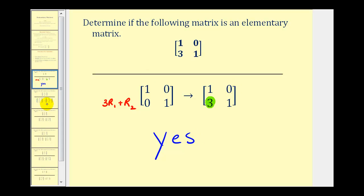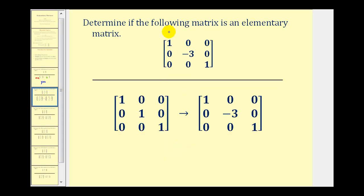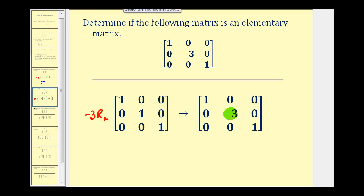Let's look at several more examples. We're given this matrix, so we want to start with a three by three identity matrix and see if we can obtain the given matrix by performing one row operation. Notice the only change is this element here is negative three. If we were to replace row two with negative three times row two, we would obtain the given matrix. Therefore, the answer is yes — this is an elementary matrix.